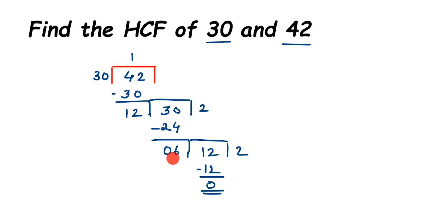Therefore, the HCF of 30 and 42 is equal to 6. I hope it's clear how to find the HCF using both the prime factorization method and the division method. If you have any other questions or doubts, you can leave a comment. Thank you so much for watching.